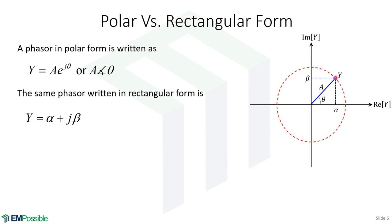If we have a point somewhere for our phasor y, the amplitude is the distance from the origin, and the angle theta is the rotation off of the positive real axis. We can write the same thing in rectangular form, where we have a real part and an imaginary part multiplying j. The same point y has distance alpha along the real axis and distance beta along the imaginary axis. When adding or subtracting phasors, we prefer rectangular form; when multiplying or dividing, we like polar form.